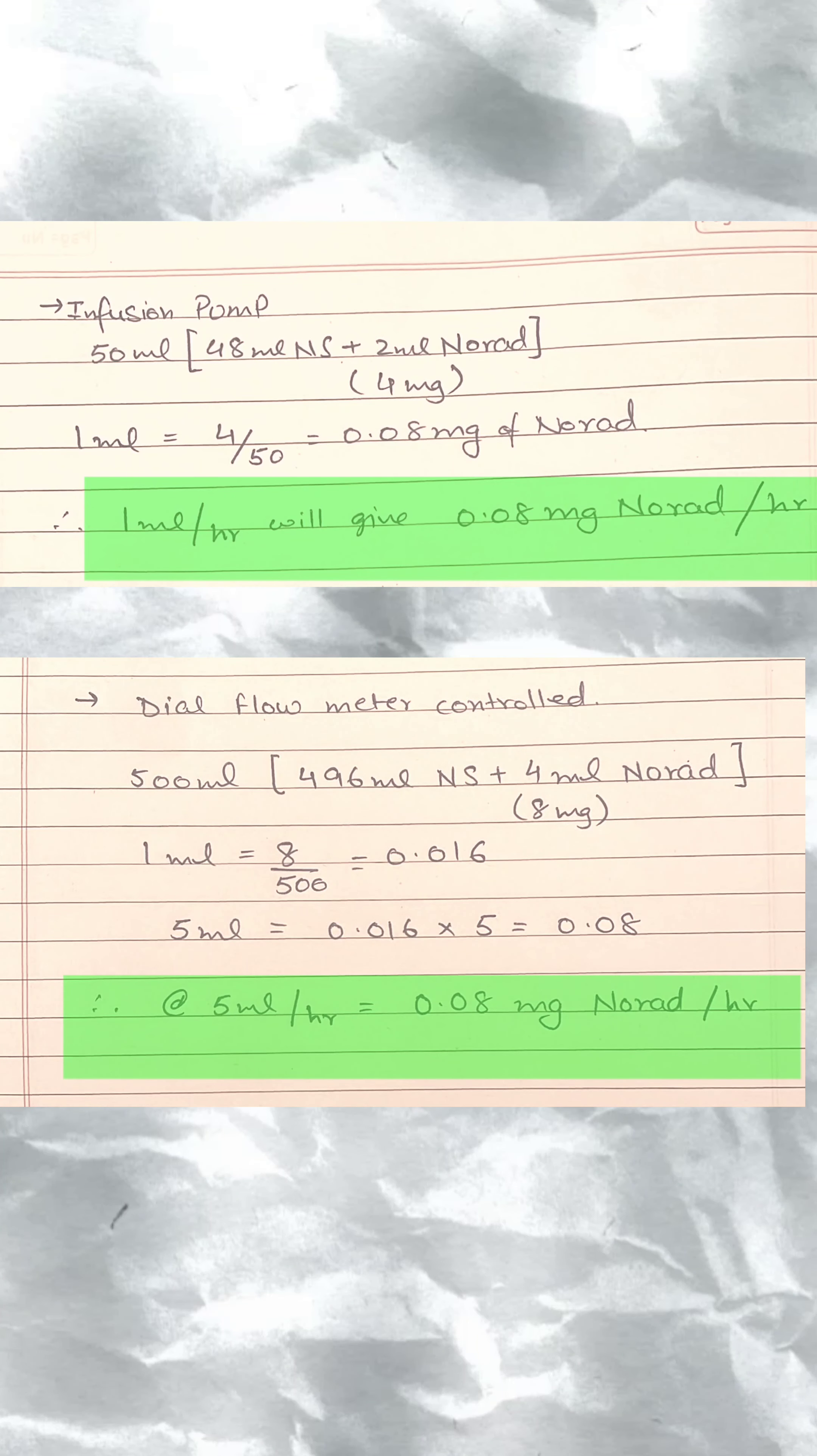But what will you do if you don't have this facility of an infusion pump? In such cases, you can still start the infusion by using 500 ml NS, and instead of one, put two ampoules of norad—that will be 8 mg of it.